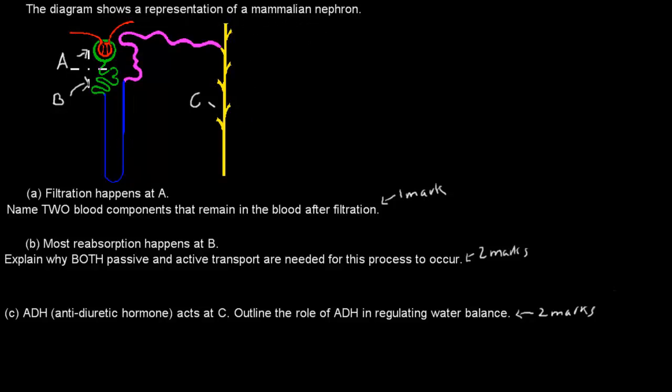This is a diagram with A, B, and C. Question A: filtration happens at A. Name two blood components that remain in the blood after filtration, that's worth one mark.